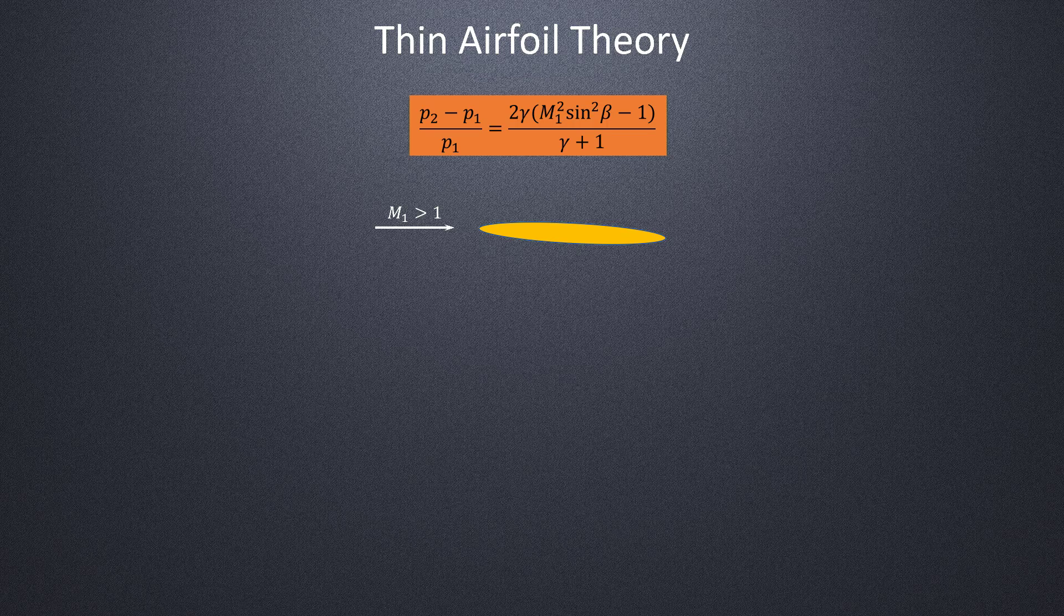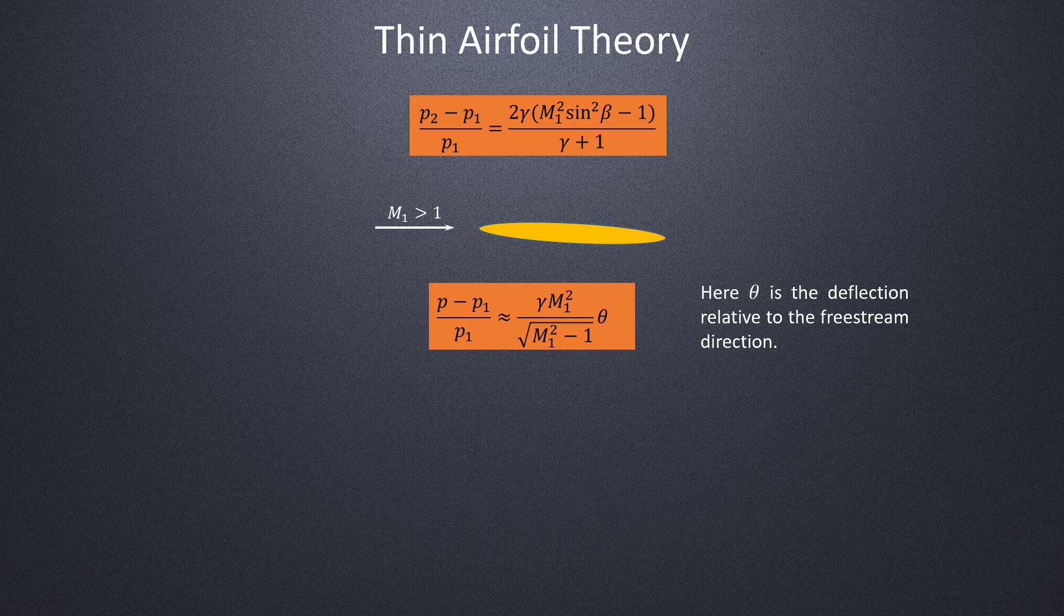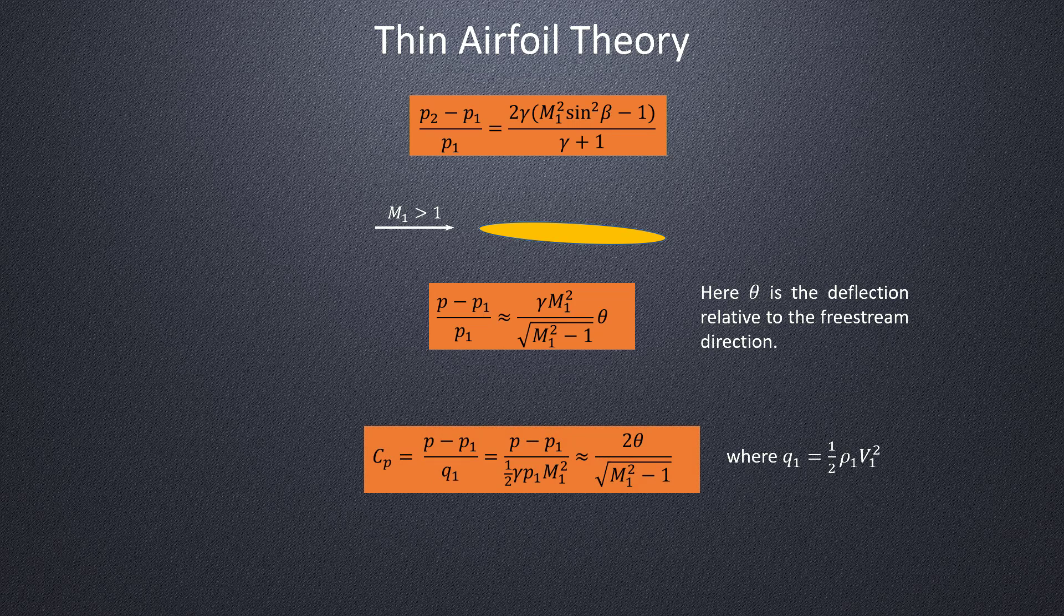The pressure ratio relation can be rewritten as shown here. The pressure coefficient is also given here. This is the basic relation of the thin airfoil theory, stating that the pressure coefficient is proportional to the local flow deflection.